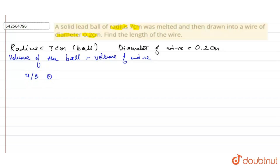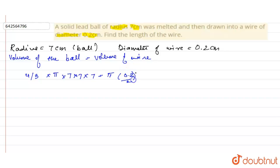So we write: (4/3) × π × 7 × 7 × 7 = π × (0.2/2)² × h. Solving for h, we cancel the π on both sides, giving us h = (4 × 7 × 7 × 7) / (3 × (0.1)²).